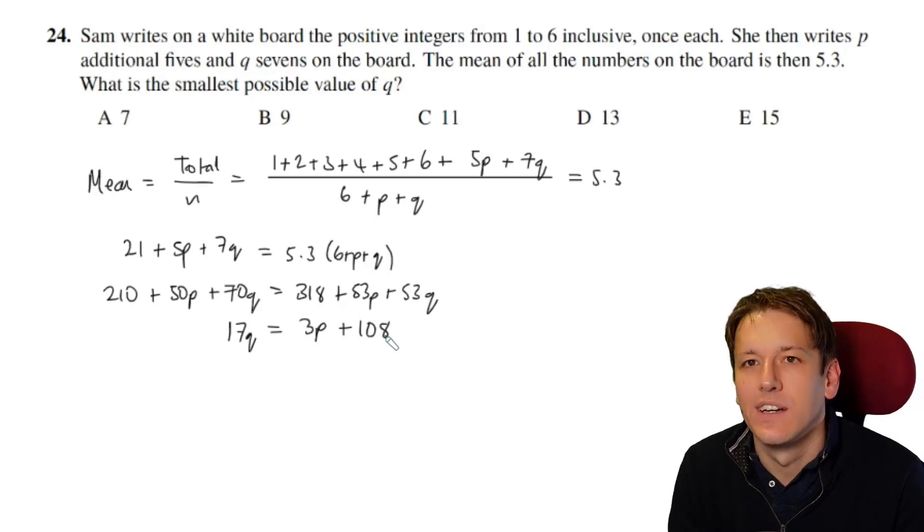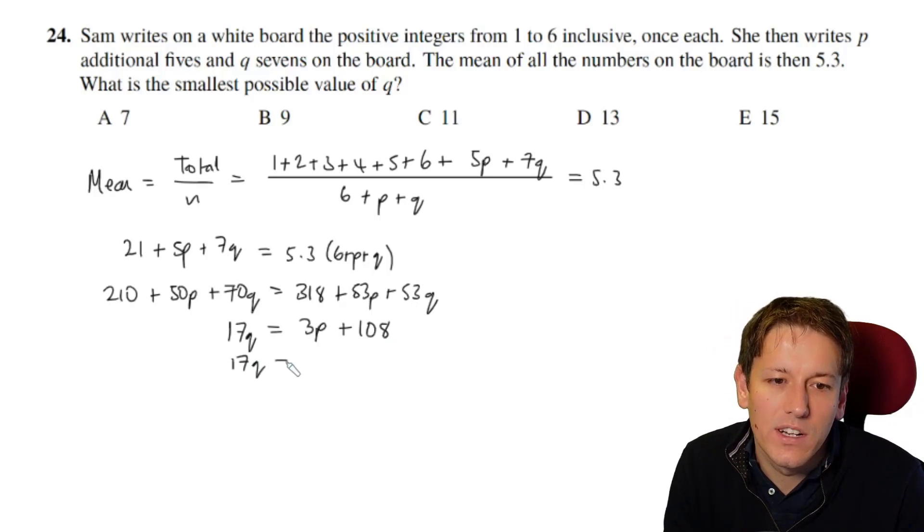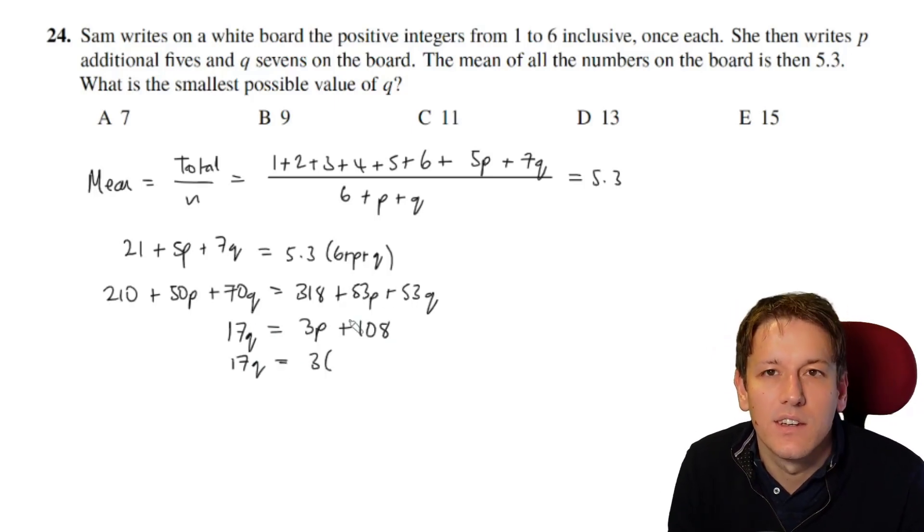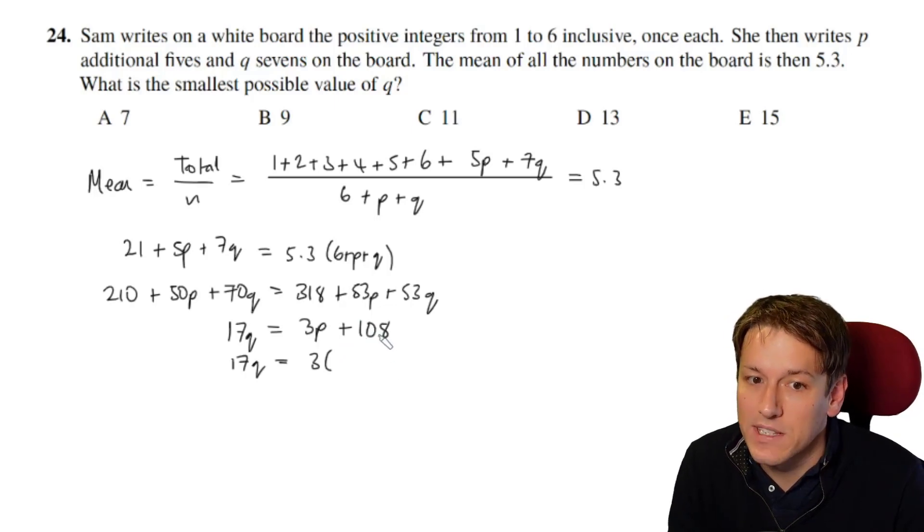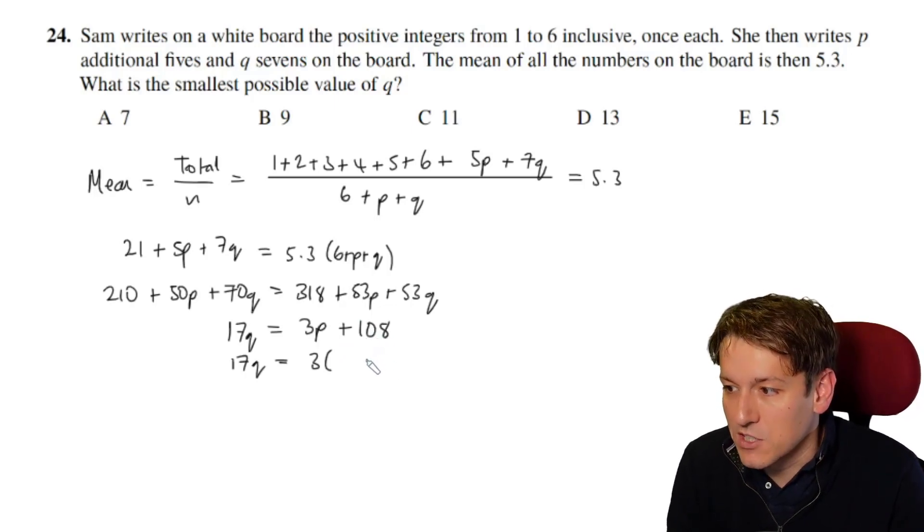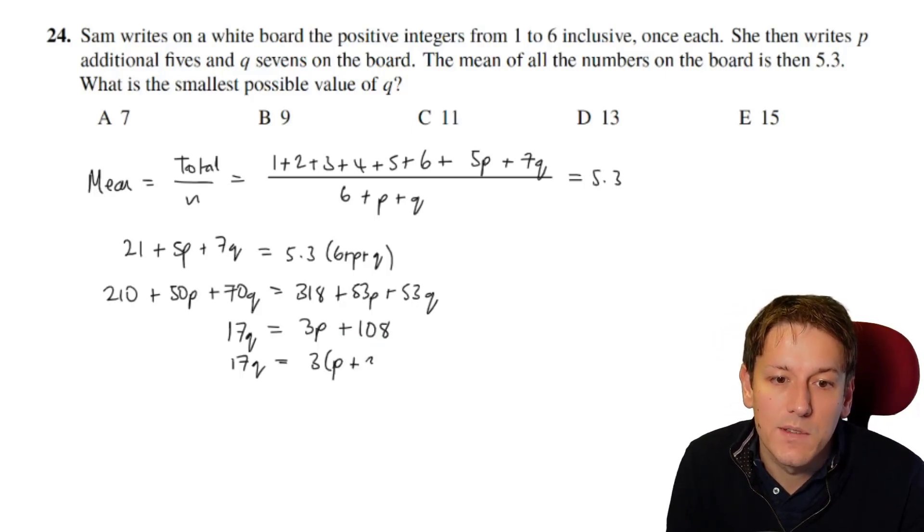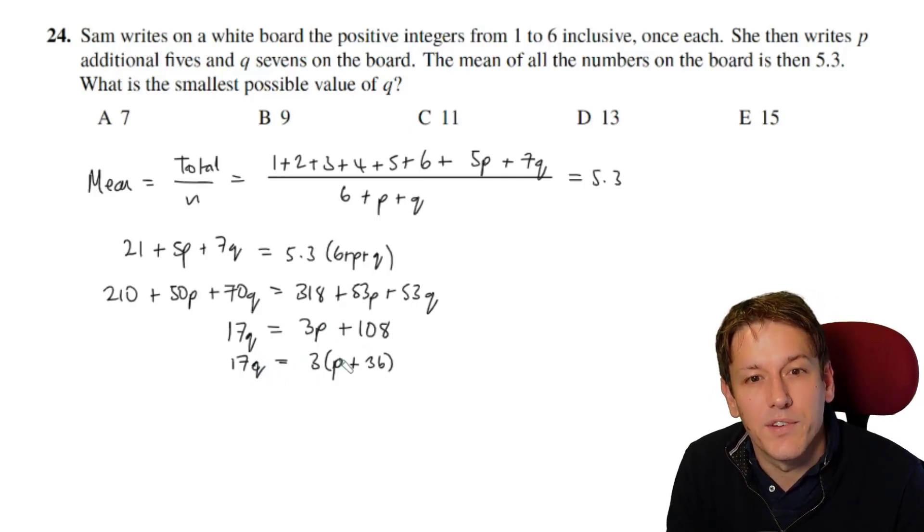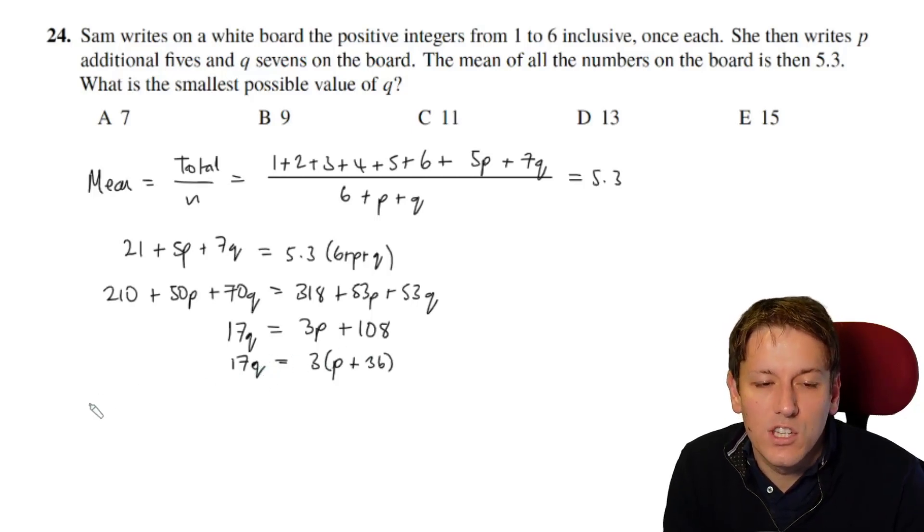Now we're always looking out for common factors and things in math challenge questions in this sort of question for sure. What I notice here is the right-hand side has a factor of 3. Quickly looking at the divisibility test for 108, 1 plus 0 plus 8 is 9. 9 is a multiple of 3, so I know this is a multiple of 3. So I get 3 here times p plus 36. So the thing I notice here now is that for this to work, q is going to have to be a multiple of 3. p and q have to be integers here. So because the right-hand side is a multiple of 3, q needs to be a multiple of 3.